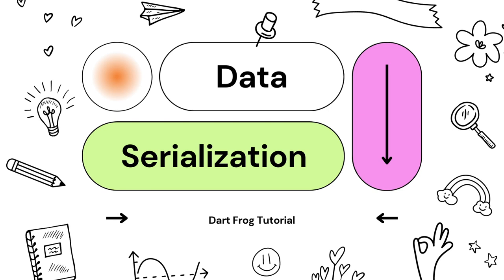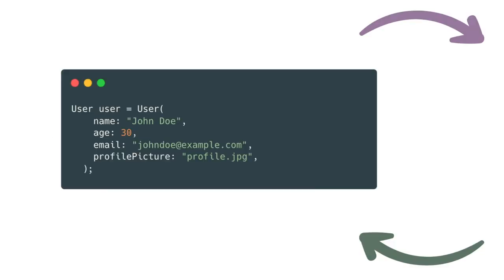Let me explain data serialization with an example. Imagine you have a complex data structure in your mobile app or backend application — like a user profile with various attributes such as name, age, email, and profile picture. You want to save this user's data to a file and send it over the internet to store in a database. However, these operations typically work with simpler data formats like strings or binary data, not complex objects. Even if we send it, the backend will not be able to detect what this user object is — we personally defined it in our mobile application. The solution to this is data serialization.